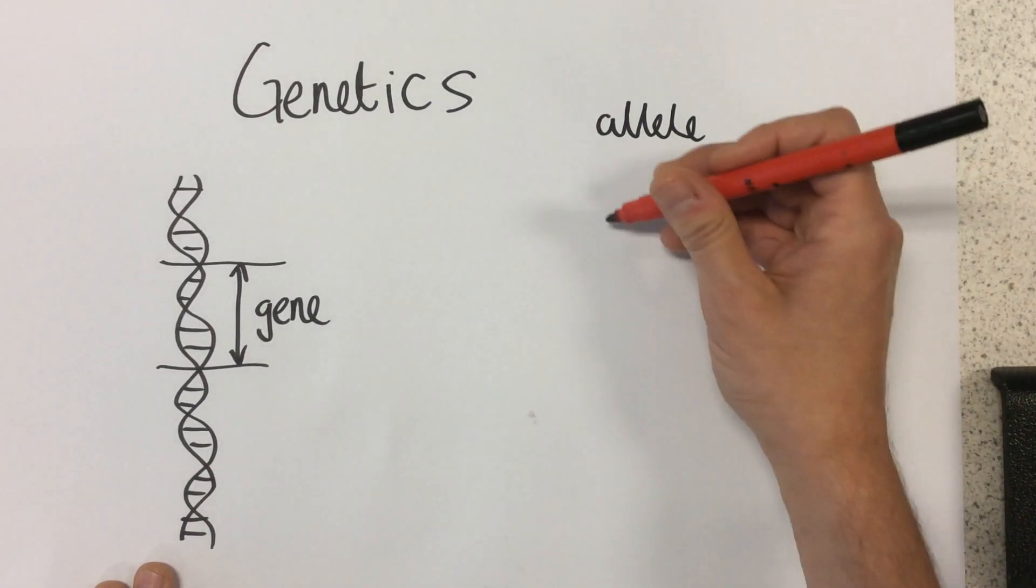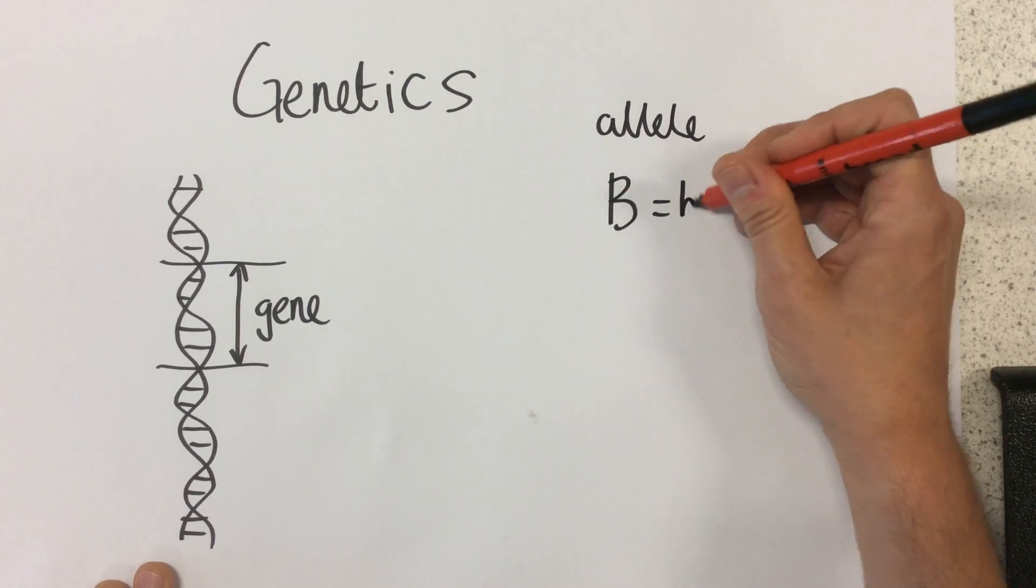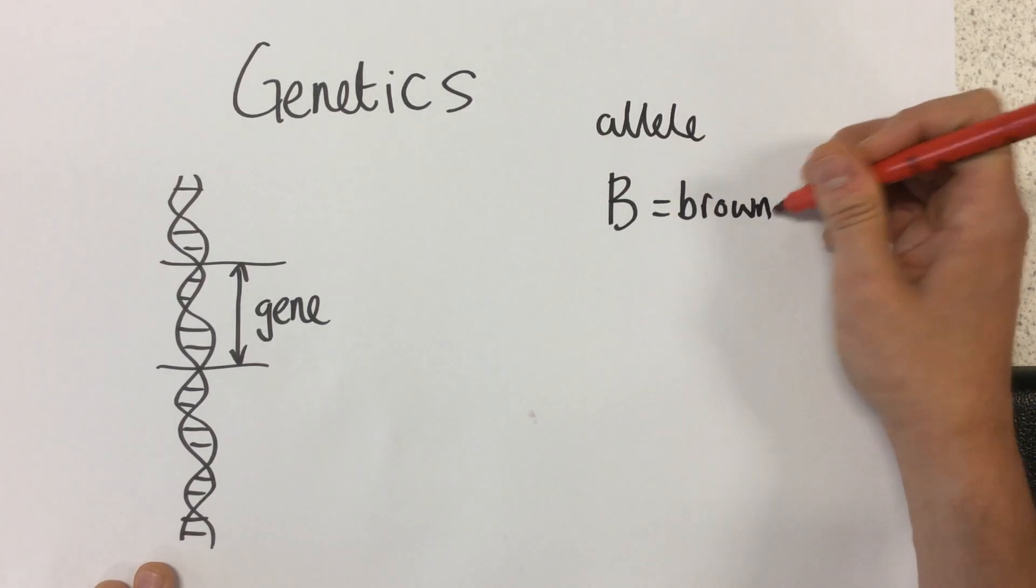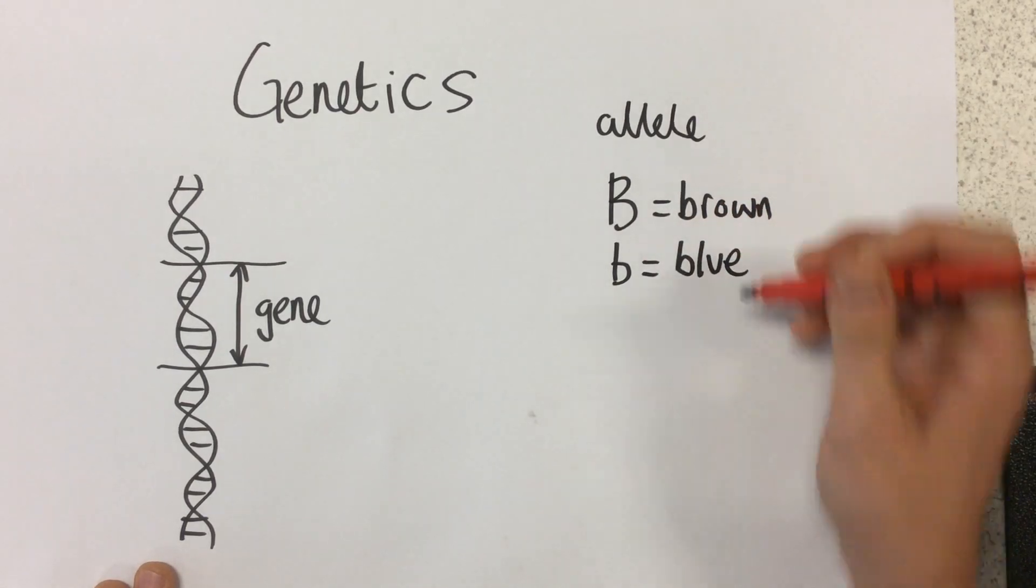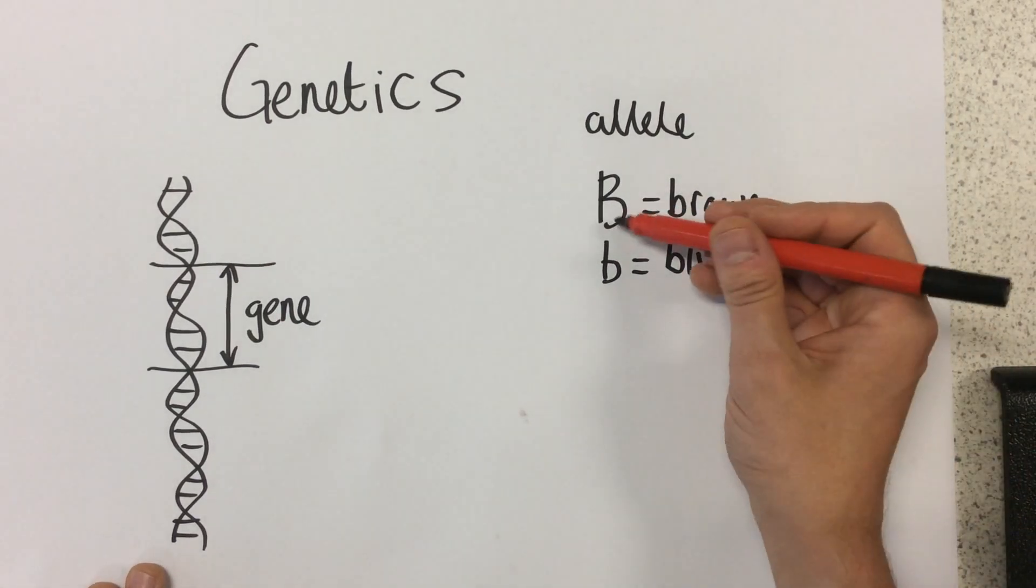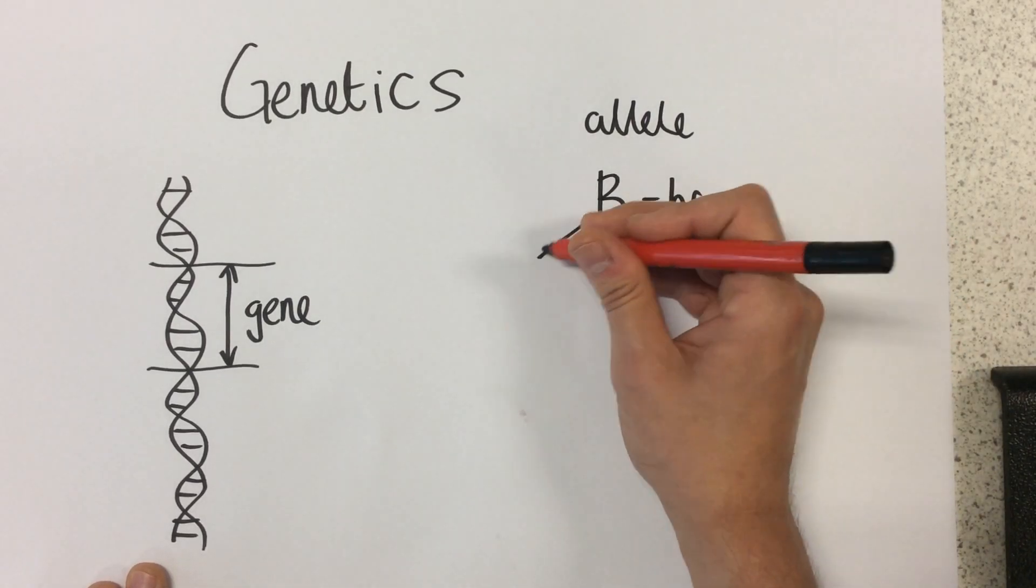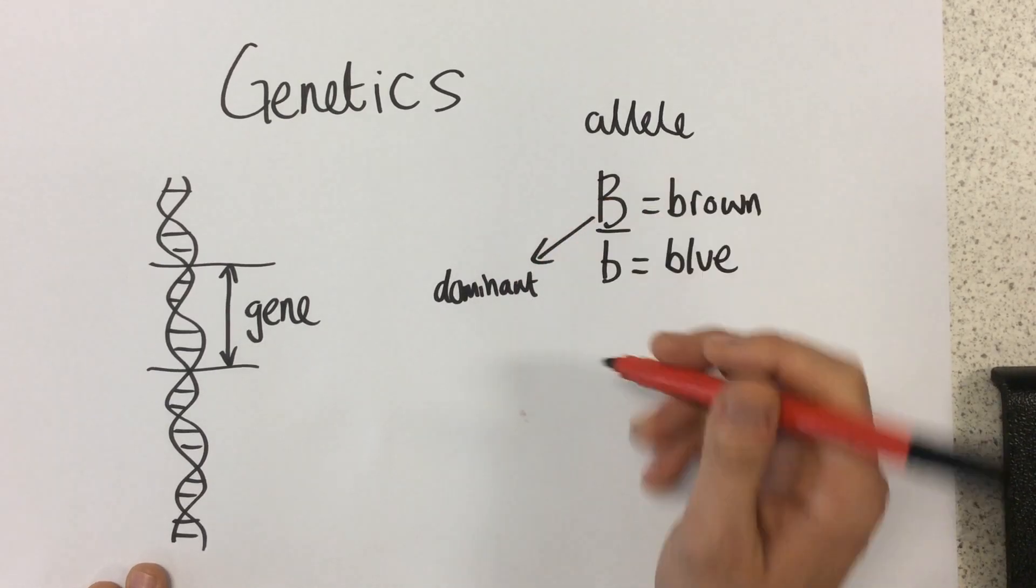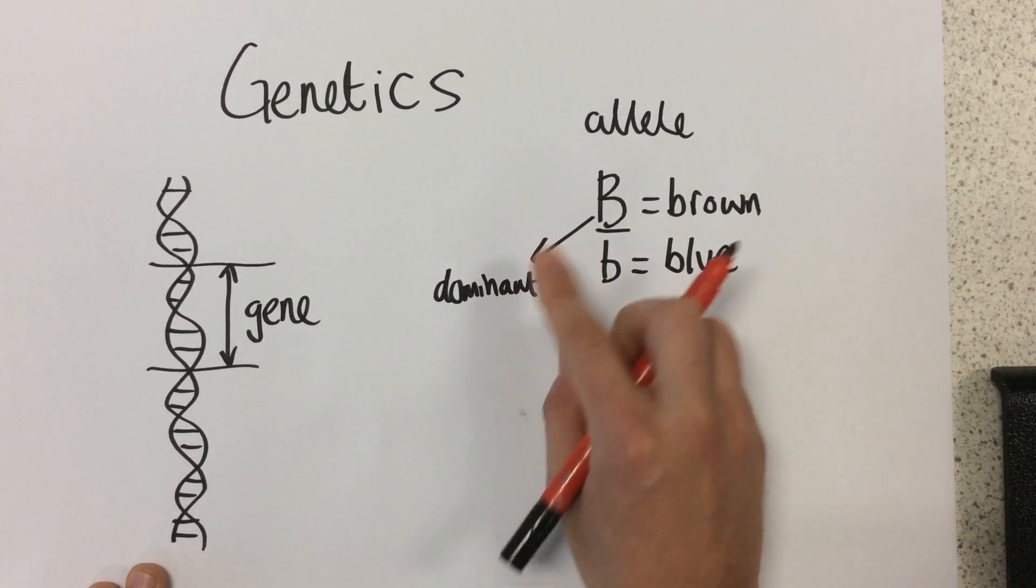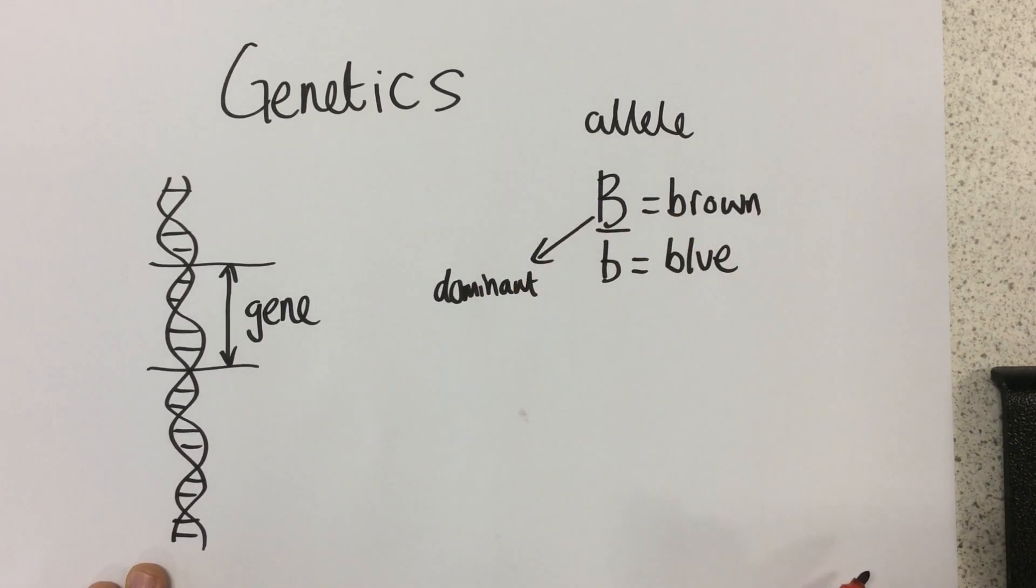So let's say you have this allele for brown eyes from your mother and this allele for blue eyes from your father. Now the one with a capital letter is denoted like this because it is dominant. This means we only need one of this allele for this to be expressed in the phenotype. We'll get to what that means in a second.